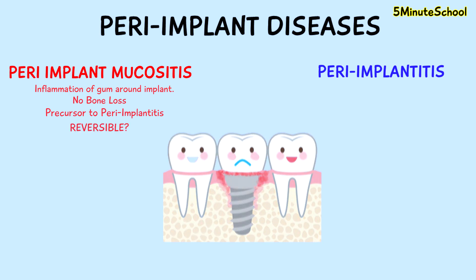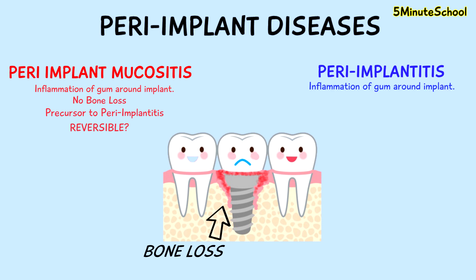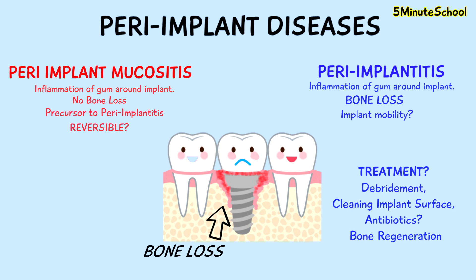With peri-implantitis, we have gingival inflammation around the implant which has progressed, and we have bone loss around the dental implant. Treatment depends on how extensive it is, but it usually involves debridement or cleaning around the implant. In some cases, antibiotics are given and the implant surface is also cleaned. There are also various techniques to help regenerate the bone, including bone grafting. Treatment of peri-implantitis is usually surgical in nature.